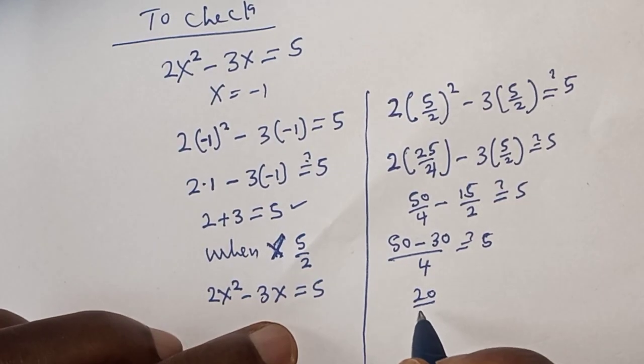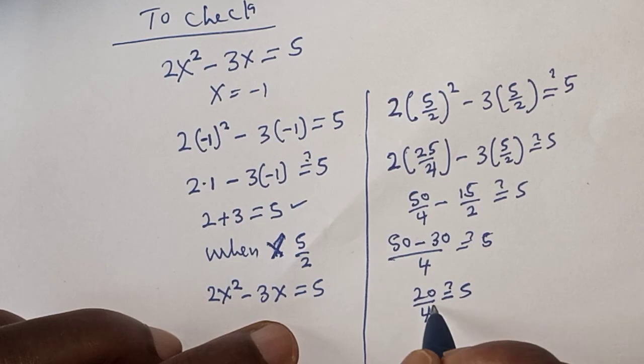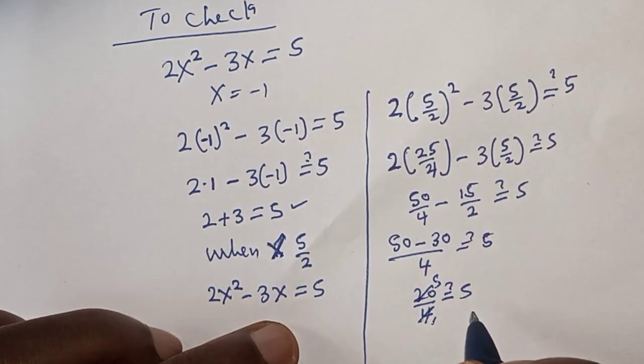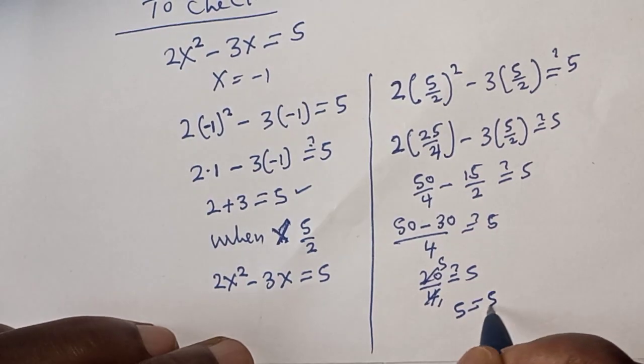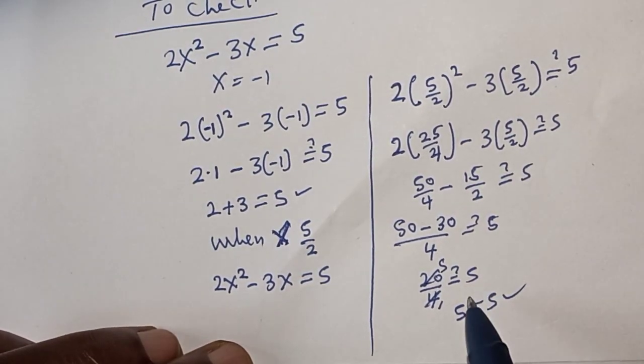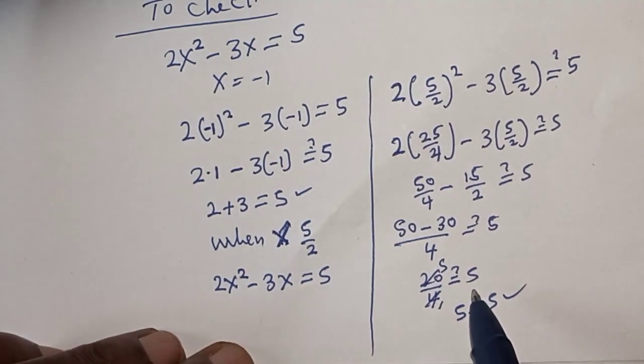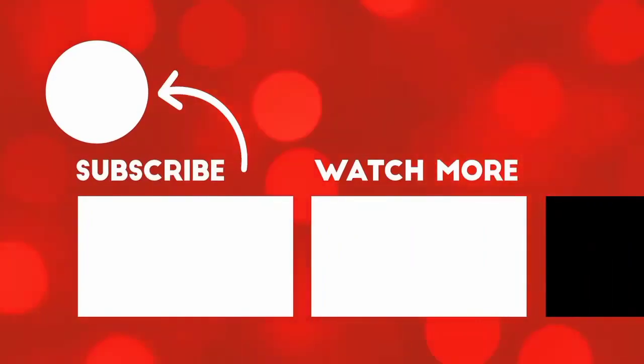50 - 30 = 20/4 = 5, therefore 5 = 5. We satisfy the equation when x = 5/2. Before you leave, like, share, comment and subscribe. Thank you, bye bye.